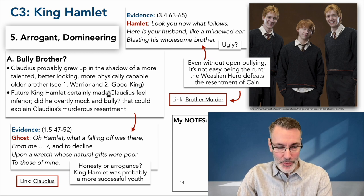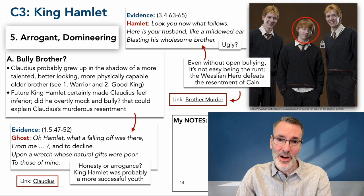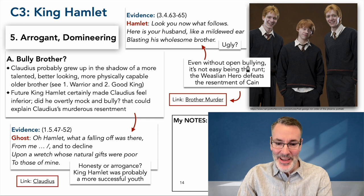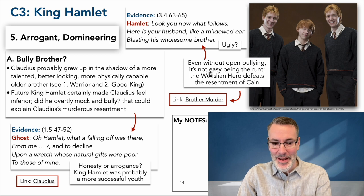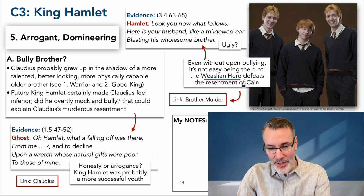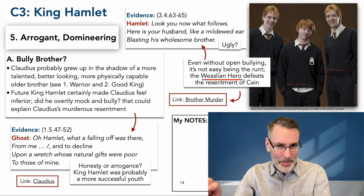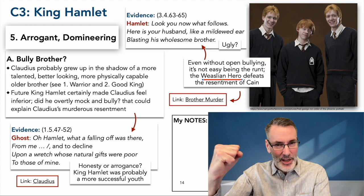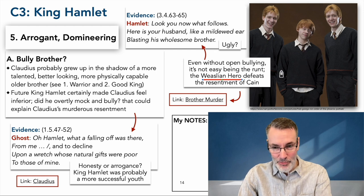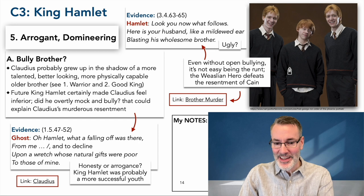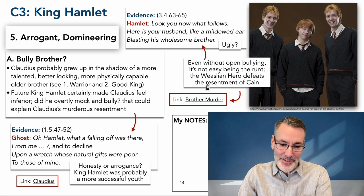Go back and look at what we talked about: the warrior and the good king. Everybody loved King Hamlet — poor Ron. Even without being openly bullied — Ron Weasley is never openly bullied by his older brothers, they tease him a bit, but brothers tease — even without open bullying and cruelty, it's not easy being the runt. The Weasleian hero is the one who finds a way through. He's tortured and tempted to become the Cain, to become the Joker. Joker and Batman are the same characters — Batman is the superior older brother, and the Joker is the runt. Ron Weasley is the Weasleian hero in that he defeats that growing resentment in him. Please go watch that brother murder video.